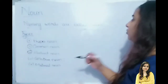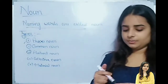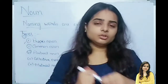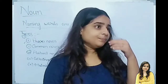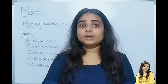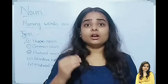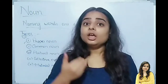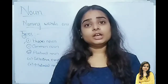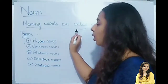Types of nouns — number one: Proper Noun. What is a proper noun? A definite name of any person or thing. For example, 'girl' is a common noun, but 'Meera' is a definite name — that's a proper noun. The definite name, like Kumul — that's a proper noun.